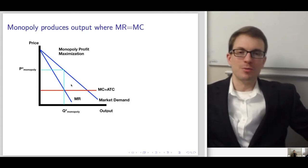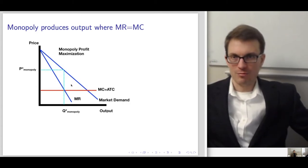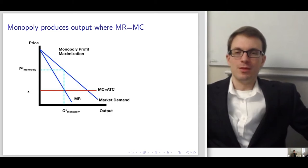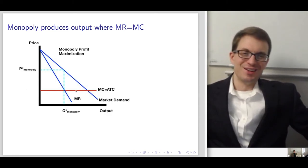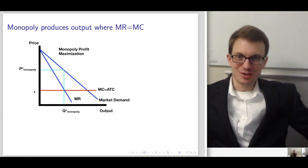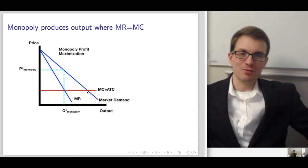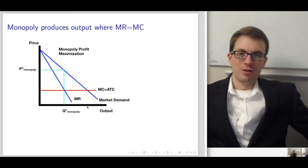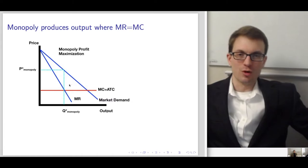If the market were served by a competitive market, price would be set equal to marginal cost — way out further along the quantity axis. The competitive output would be something out there. This shows us that the monopoly actually restricts output so as to raise the price, and this whole area of foregone trade becomes deadweight loss.